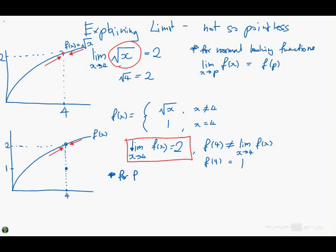This limit function really means that for f of x, as x gets infinitely close to 4, f of x will get infinitely close to 2. That's the way to think about it.